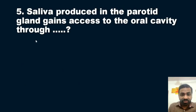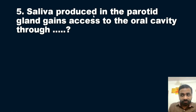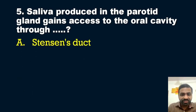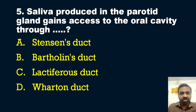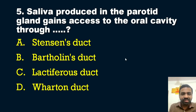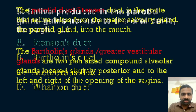The fifth question: saliva produced in the parotid gland gains access to the oral cavity through which duct? Options: A — Stensen's duct, B — Bartholin's duct, C — lactiferous duct, D — Wharton's duct. The answer is option A — Stensen's duct. The parotid duct (Stensen's duct) is the route saliva takes from the parotid gland — the major salivary gland — into the mouth.